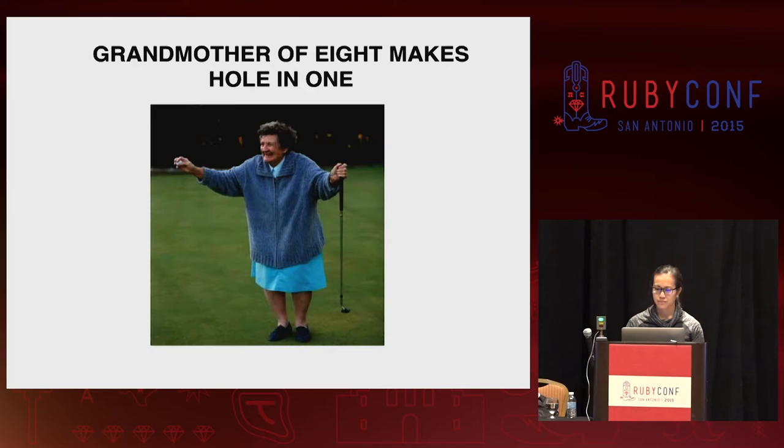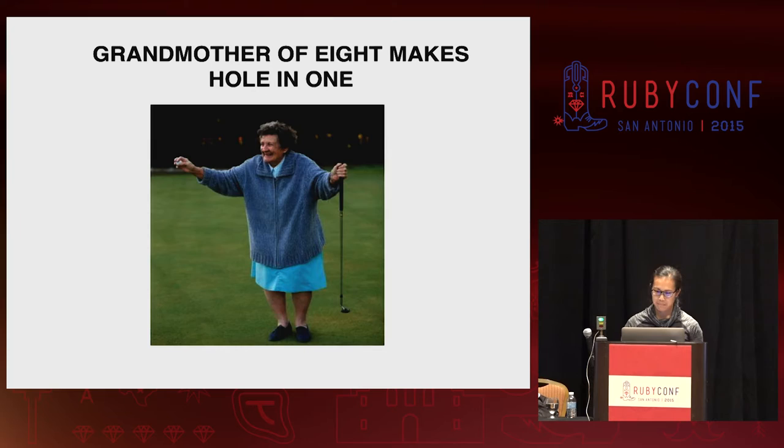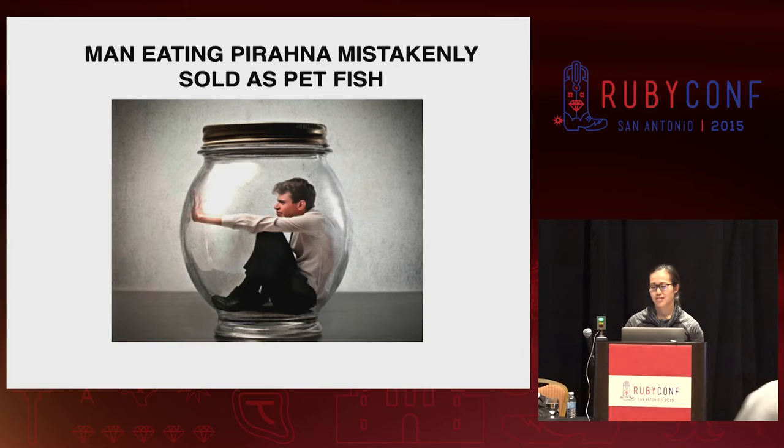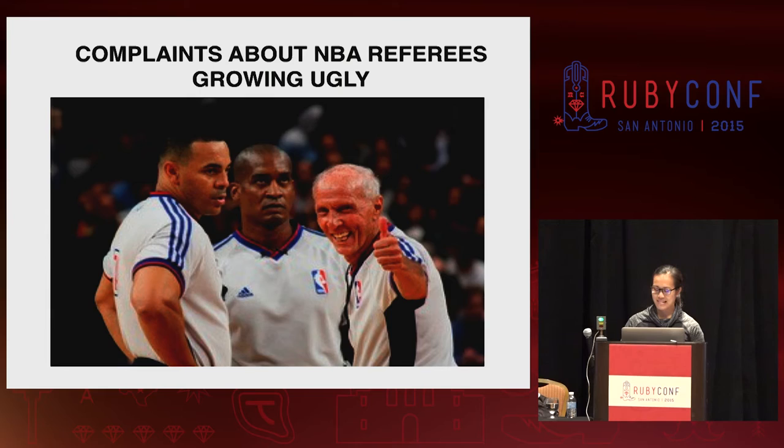Ambiguity in words or sentence structure can also produce hilarious, unintentional second meanings for newspaper headlines, such as: 'Grandmother of eight makes a hole in one,' 'Man eating piranha mistakenly sold as pet fish,' 'Eye drops off shelf,' 'Complaints about NBA referees growing ugly,' and my personal favorite, 'Milk drinkers are turning to powder.'